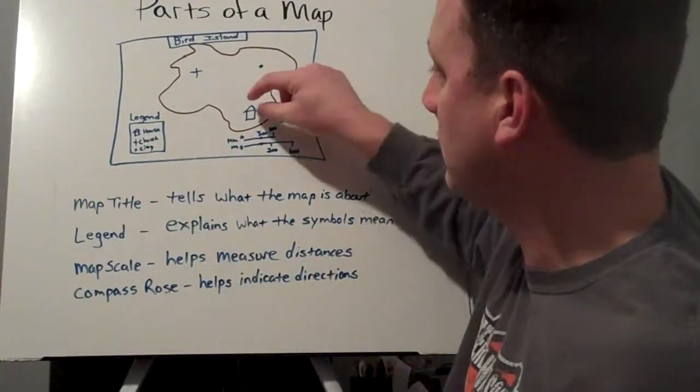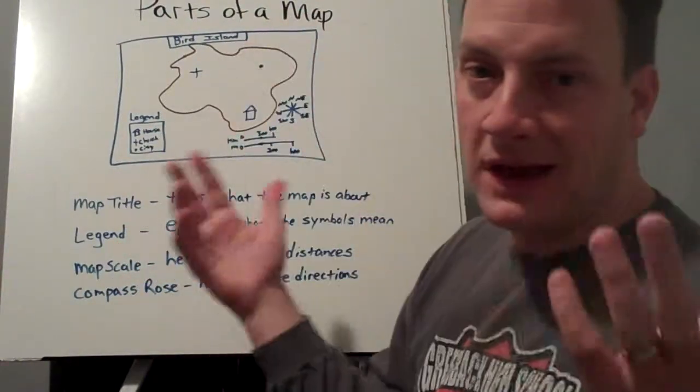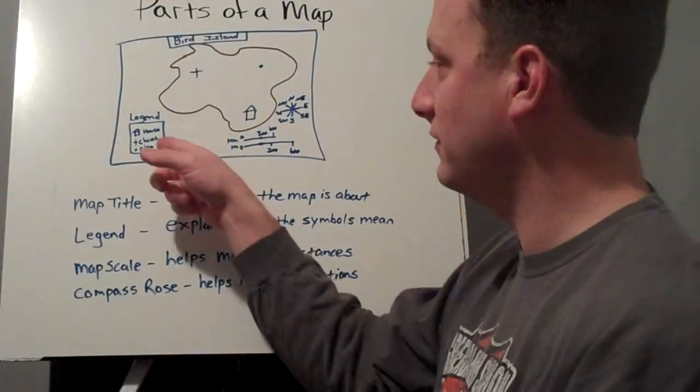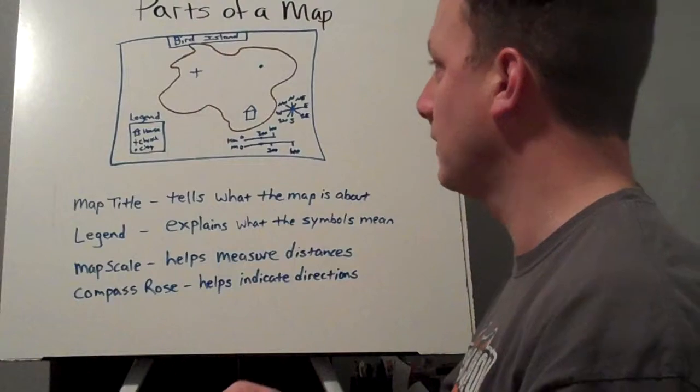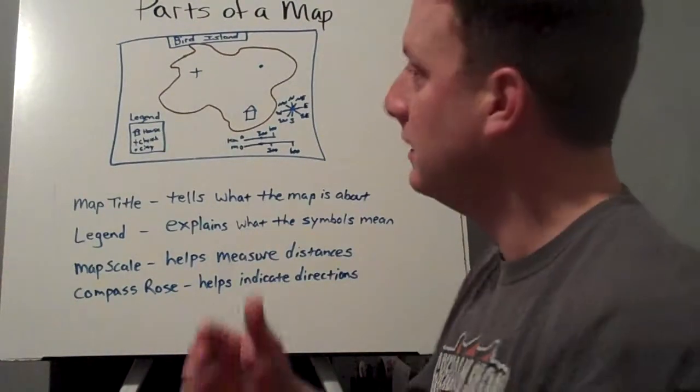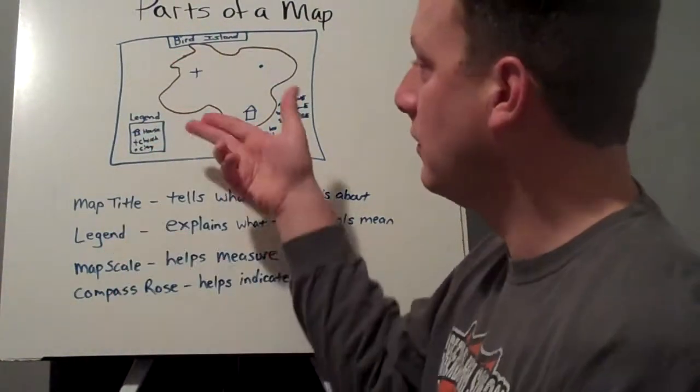Now my example, I'm not sure you can see it real well, but I drew a little house—that's going to be my house. There's a cross there—it represents a church, and a dot will represent a city.